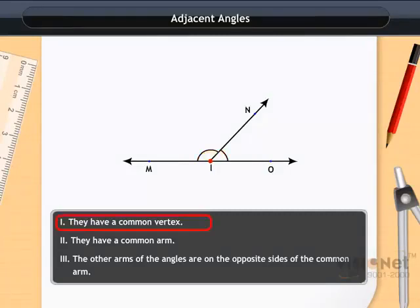They have a common arm, so the second condition is also satisfied. ML and LO are on opposite sides of the common arm LN. So these two angles MLN and NLO are adjacent angles. Thus, the third condition is also satisfied.